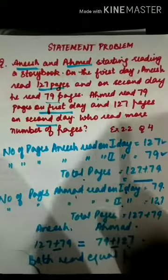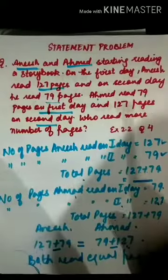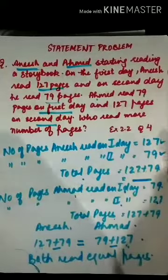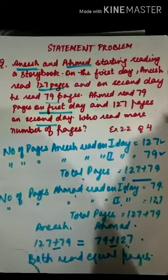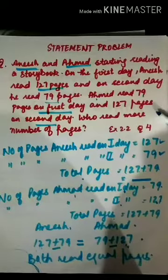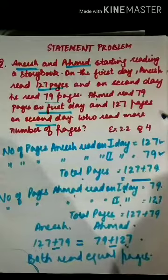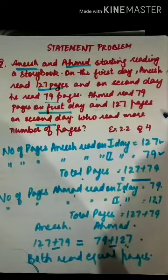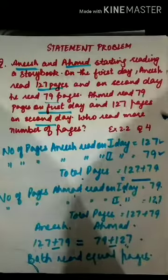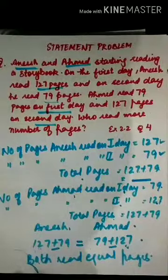I hope you are clear with the statement problems. You have to practice similar questions from exercise 2.2 of your book, which will be provided to you as a PDF. Today we have completed two properties of whole numbers — closure property and commutative property. Revise them thoroughly and practice more questions. Thank you.